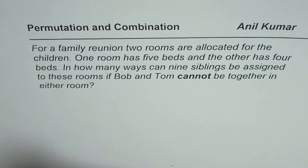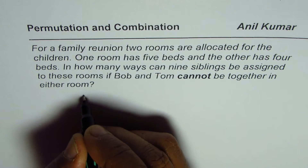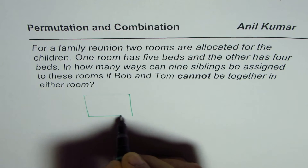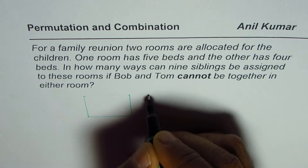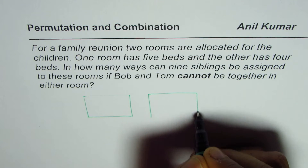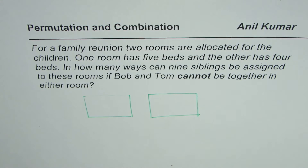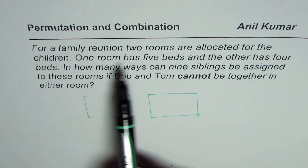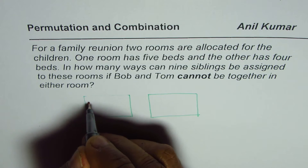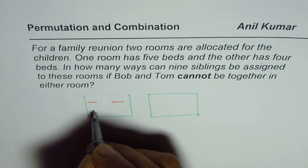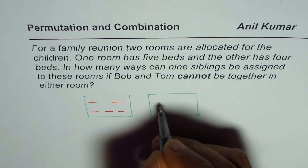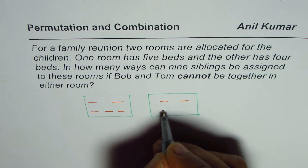Now, to solve such questions, let's picturize. Let's say these are the two rooms in which nine children should be accommodated. One room has five beds — let's say these are the five beds in one room — and the other has four.